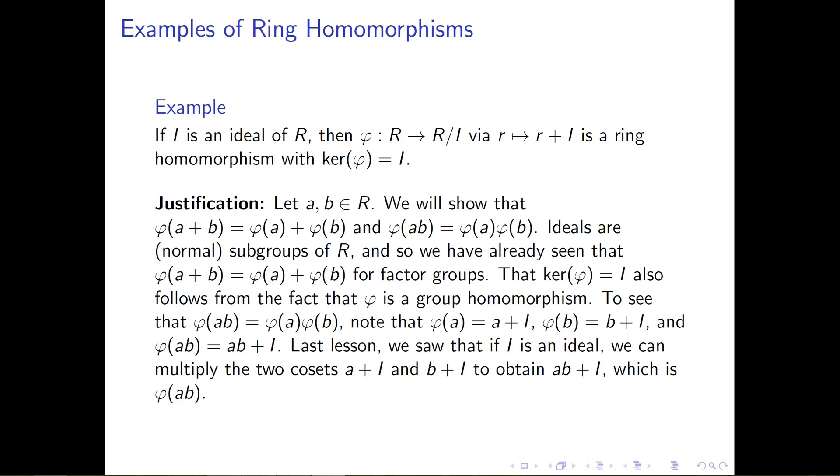In the lesson where we learned about factor rings, we saw that if we now have the additional structure, that I is not just a subgroup or a subring, but that I happens to be an ideal, then we were able to define a multiplication on the factor group R mod I that turned it into a ring.